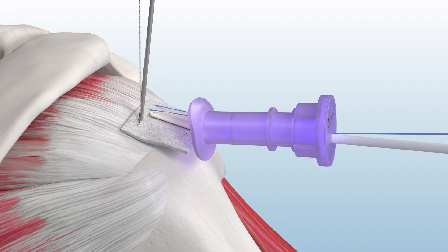Now, secure Biobrace to the rotator cuff by tying one set of medial suture.